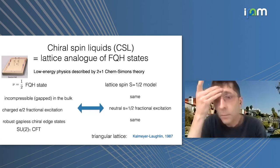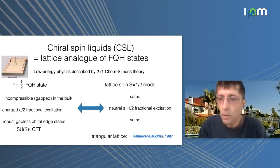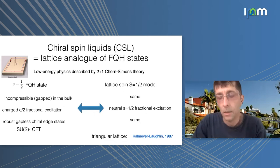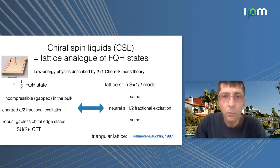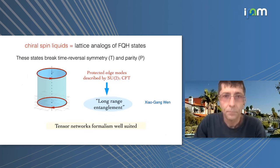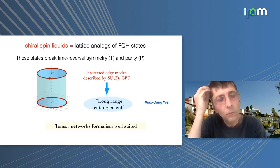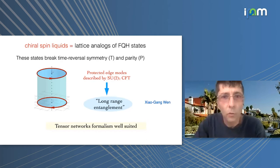In the seminal work by Kalmeyer and Laughlin in 1987, they suggested that on the triangular lattice you could get similar properties: gapped in the bulk, fractional excitations (here the fraction arises because it's spin-1/2, neutral since it's a spin system), and a chiral edge mode described by a CFT. Unfortunately for the triangular lattice this did not work out, but it was a very inspiring paper. A chiral spin liquid is a lattice analog of the fractional quantum Hall effect: it breaks time-reversal symmetry, breaks parity, and has a protected edge mode — in Wen's terminology, it's a strong topological state.